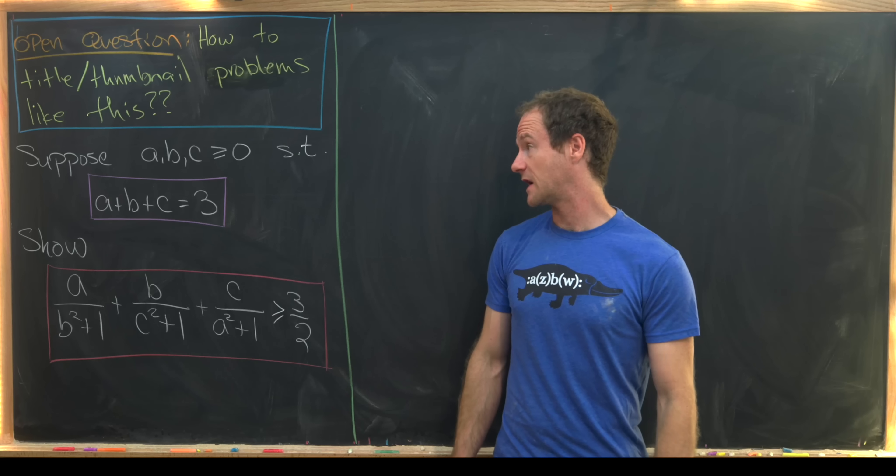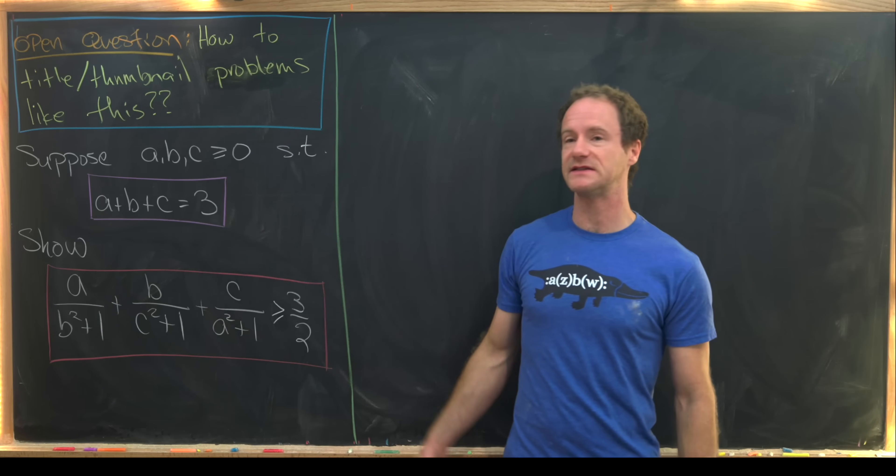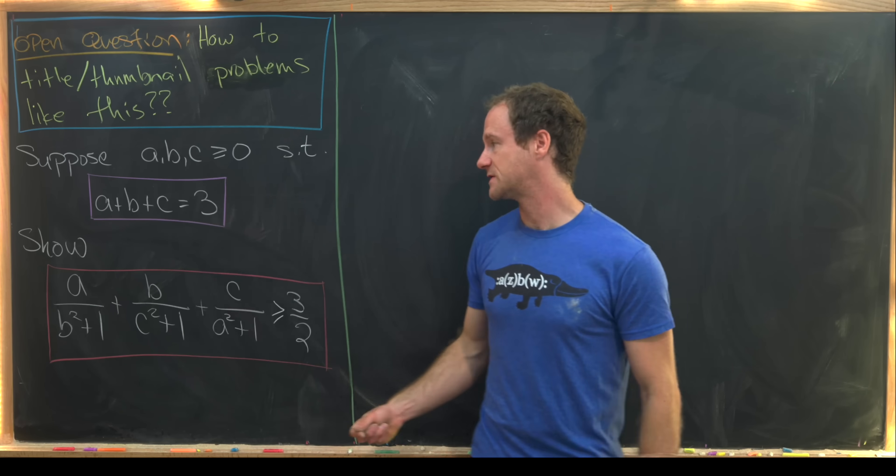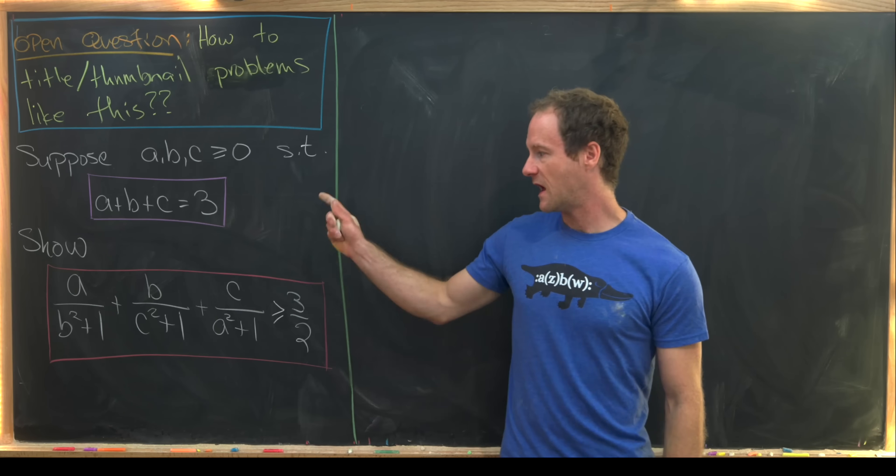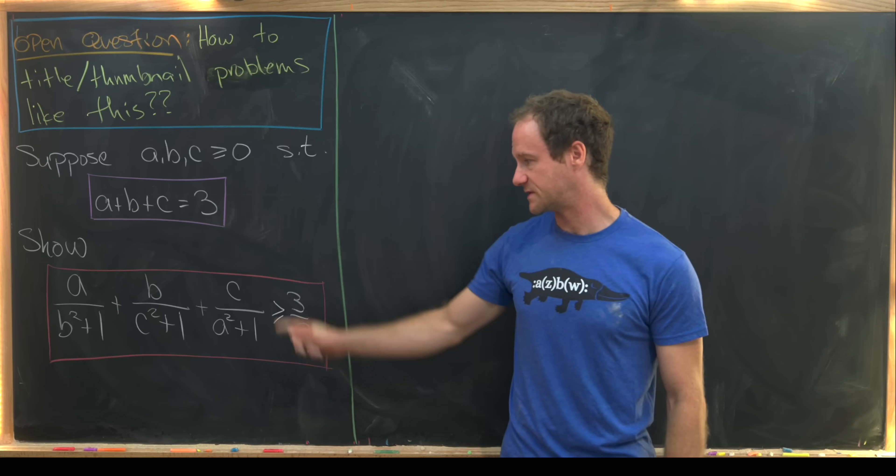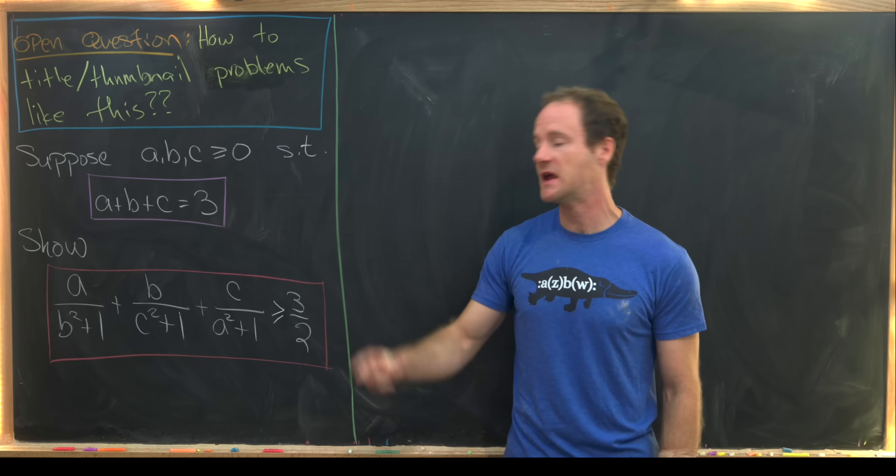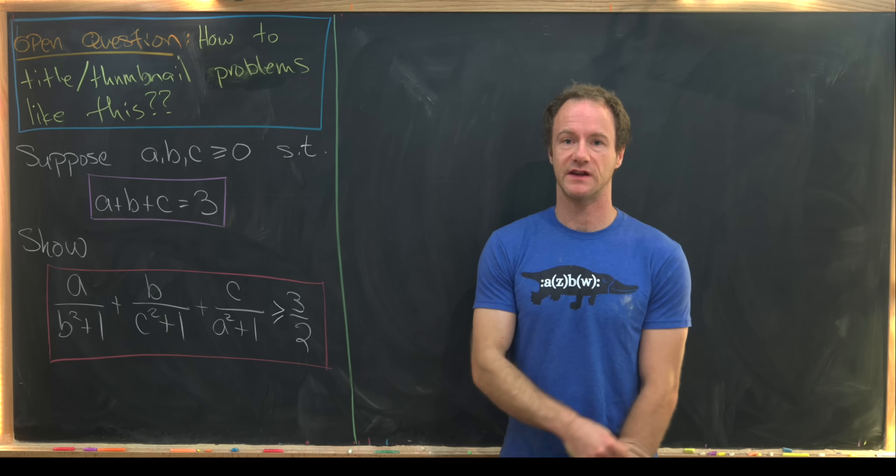Okay, so now that we've taken care of that, let's look at our problem. We want to suppose that a, b, and c are non-negative numbers such that a plus b plus c is equal to three. And then from there we want to show that a over b squared plus one, plus b over c squared plus one, plus c over a squared plus one, is bigger than or equal to three halves.